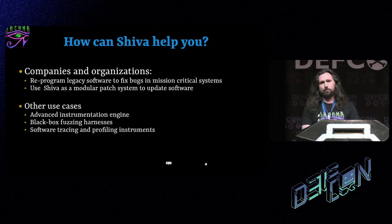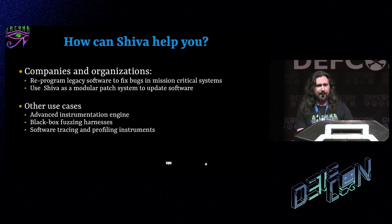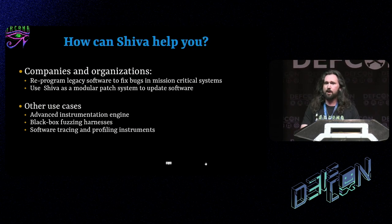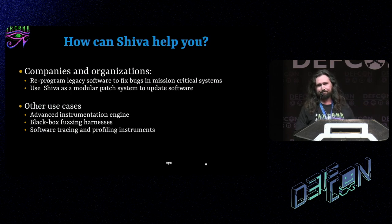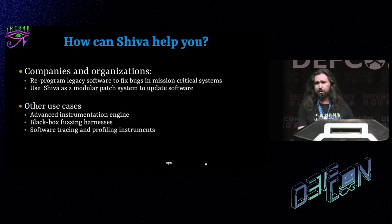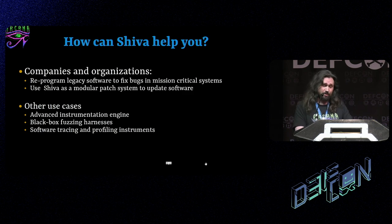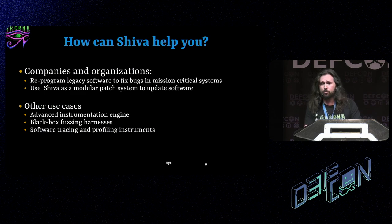So how can Shiva help you? If you're an organization or a company, there's usually legacy software that no longer has source code, and a bug comes up — whether it's a security vulnerability or some other bug — how does one fix that without source code? Patching is often clunky and there's no real development workflow for that in our industry yet. From a hacker's perspective, Shiva can do all kinds of things as well. It's an advanced instrumentation engine — you can use it to create black box fuzzing harnesses. I used it to fuzz the dynamic linker — one dynamic linker fuzzing another dynamic linker.